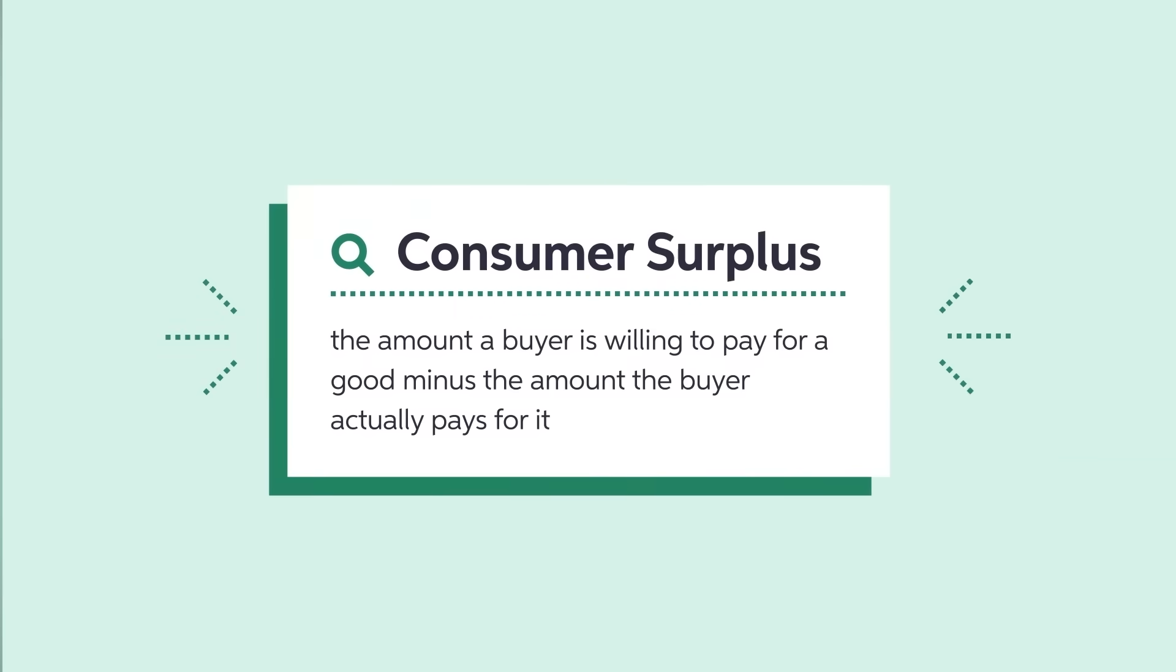From the point of view of the consumers, instead the gain from trading is equal to the difference between the amount they are willing to pay for a good, represented by the demand function, and what they actually end up paying for it, the market price. If we sum consumer gains across all transactions, what we get then is a consumer surplus, represented by the orange area on this graph.